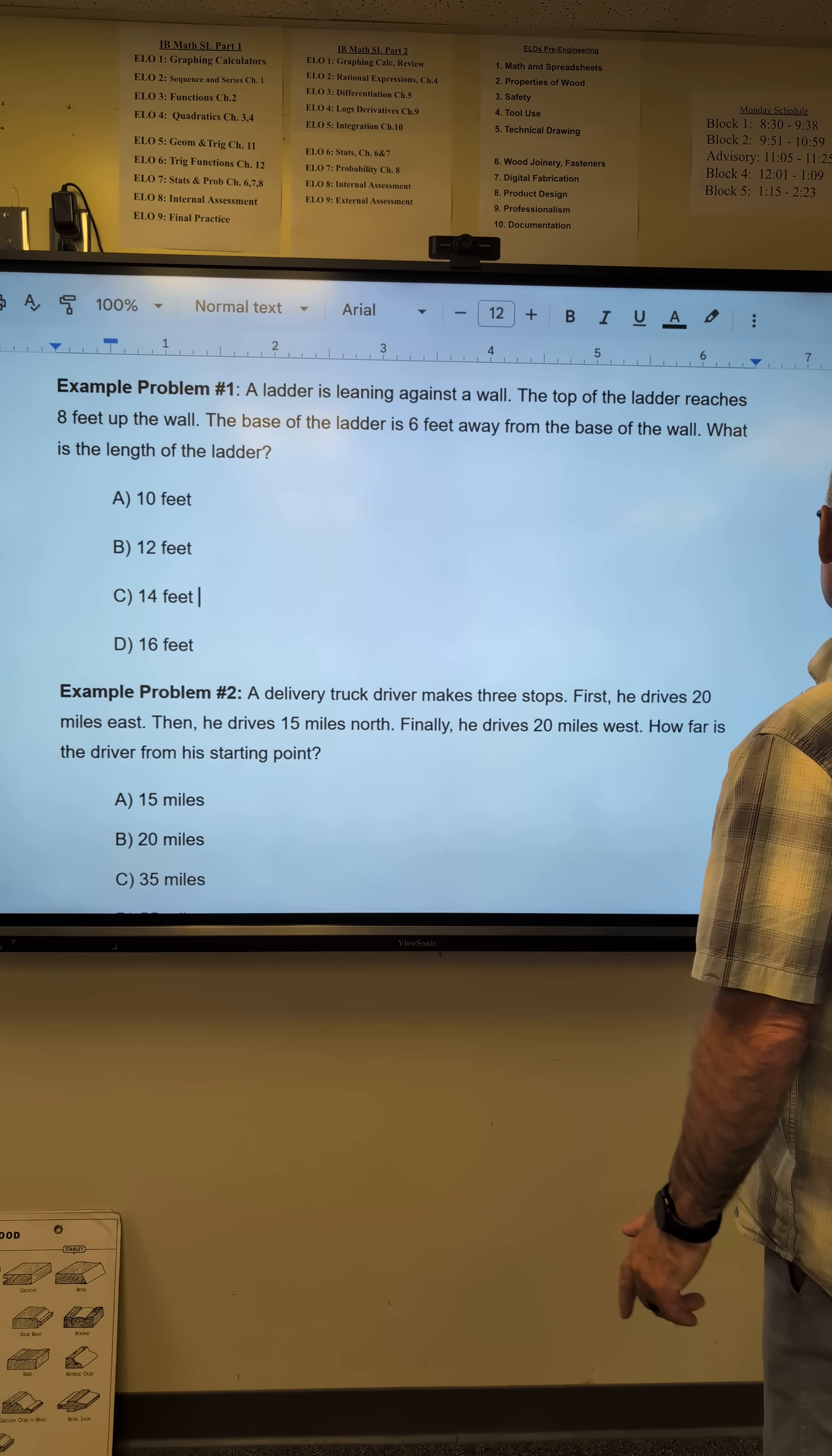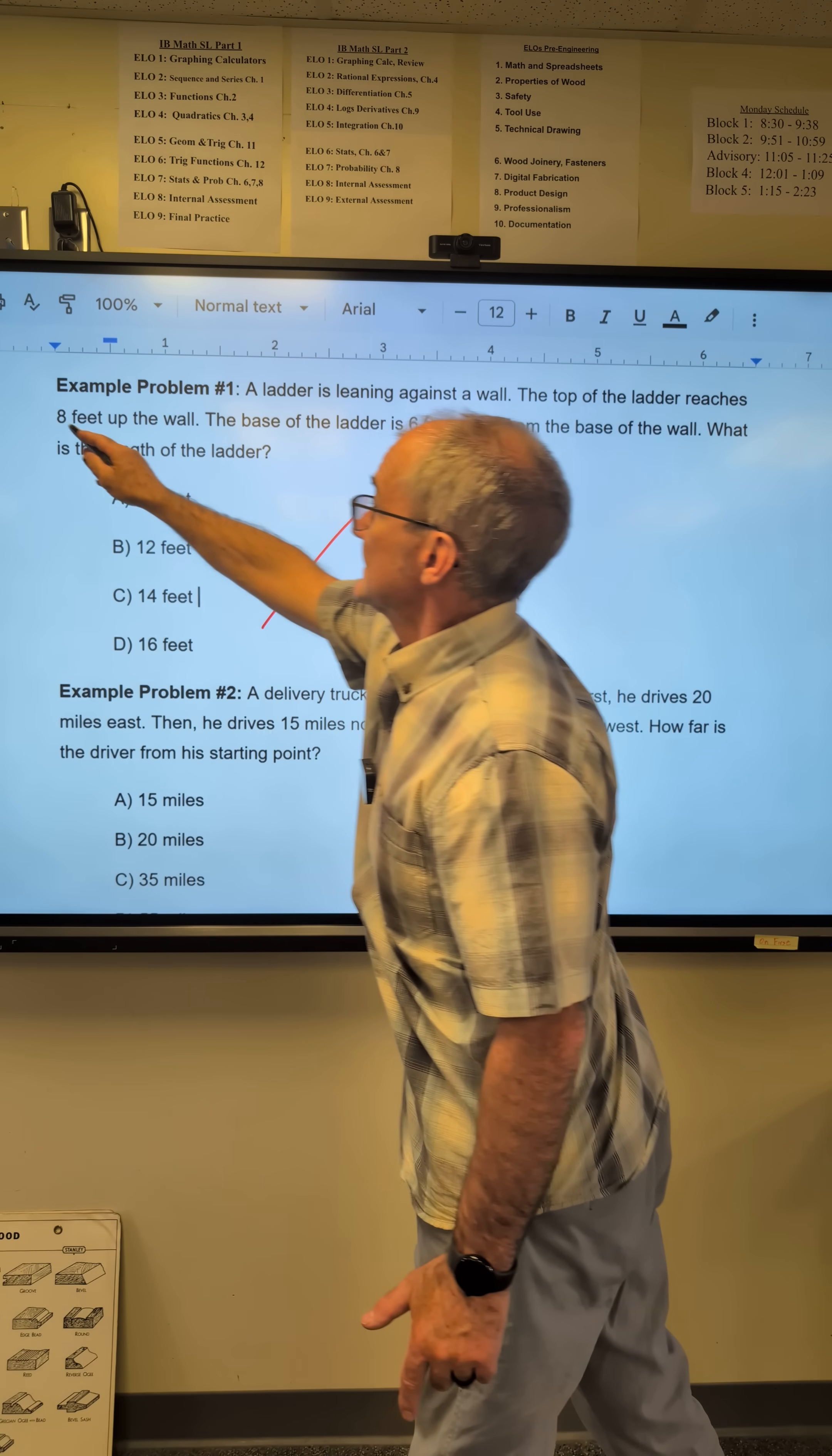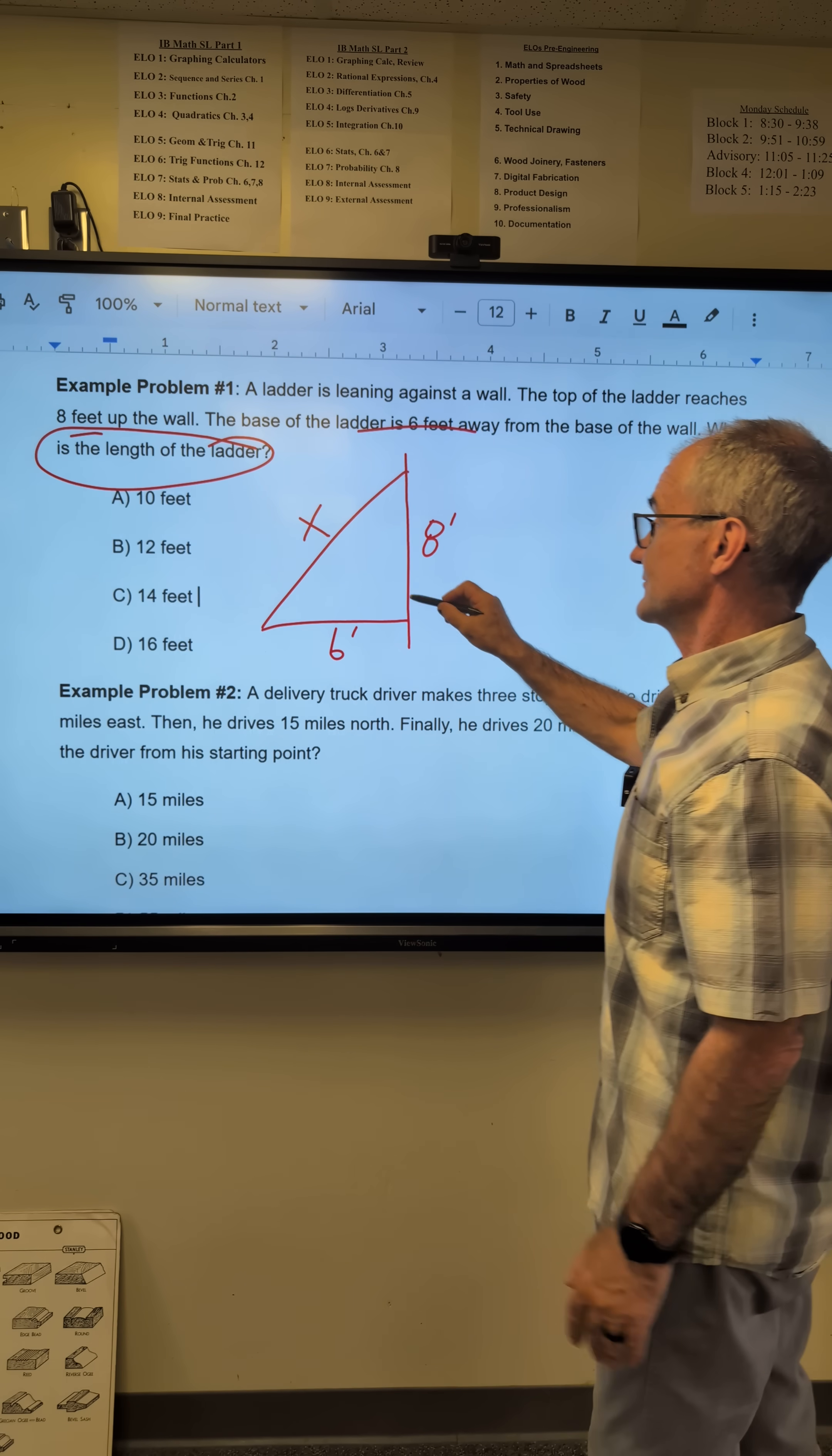Number one right here, a ladder is leaning against a wall. So I have a wall. The top of the ladder reaches eight feet off the wall. The base of the ladder is six feet away from the wall. What is the length of ladder? That's the important part. It wants to know how long this ladder is. I mark it as x because that's what I'm looking for.